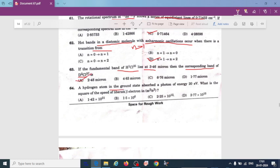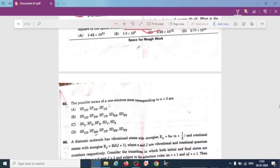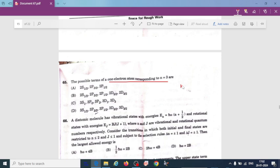A hydrogen atom in the ground state absorbed a photon of energy 20 electron volt. What is the square of the speed of liberated electron in meter square per second square? Here it is 2.25 times 10 to the power. Possible terms of a one electron atom corresponding to n equal to 3 - so n equal to 3 means here s, p, d, if you take, so d or up to d is optional. So this is option B: 2s half, 2p 3 by 2, 2p 1 by 2, 2d 5 by 2, 2d 3 by 2.